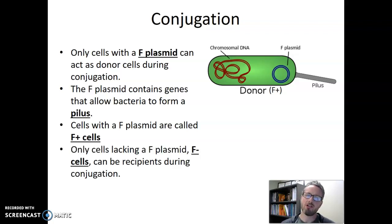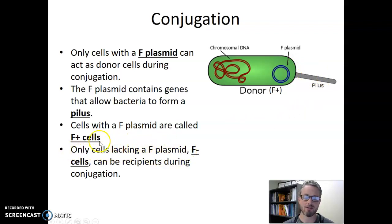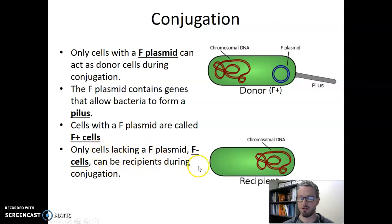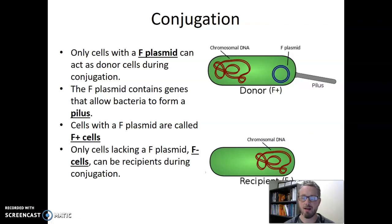In conjugation, F plus donor cells can only form a pilus and connect to cells that are lacking the F plasmid — we call that kind of cell an F minus cell. Only F minus cells can be the recipients during conjugation. Here's an example of a recipient: it has its chromosomal DNA but no F plasmid. F plus cells have the plasmid and can make the pilus; F minus cells lack the F plasmid and cannot make a pilus. These are the only two cell types that can participate in conjugation with one another.